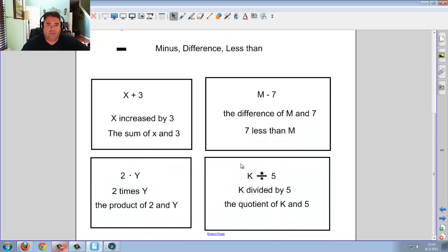So a couple examples here. x plus 3 is x increased by 3, the sum of x and 3. m minus 7 is the difference of m and 7, 7 less than m. 2 times y could be 2 times y, or the product of 2 and y. And k divided by 5 is k divided by 5, or the quotient of k and 5.